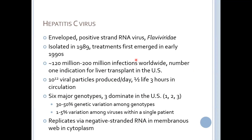Hepatitis C virus is an RNA virus. It is a positive-stranded virus, like coronavirus that we were talking about earlier, but it's a member of the flavivirus family. It was isolated in 1989 and the first treatments emerged in the early 90s. There are really large numbers of infections worldwide, and up until recently, it was the number one indication for liver transplant in the US. It's an incredibly productive viral infection with high numbers of viral particles produced per day and a very short half-life of only three hours in circulation.